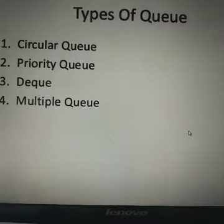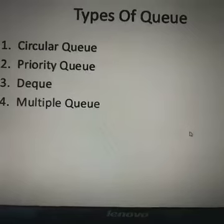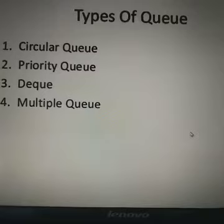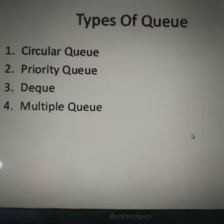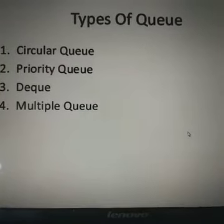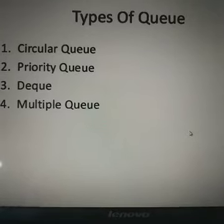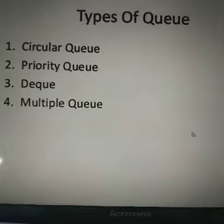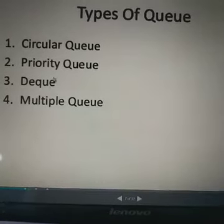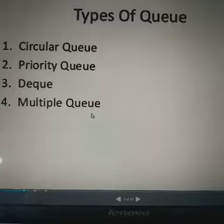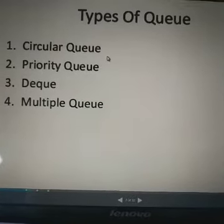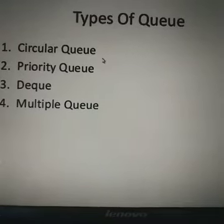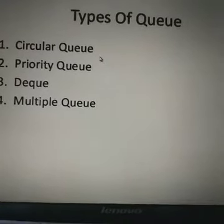In this lecture we discuss the types of queue. In the previous lecture we discussed what is the queue data structure, how we can represent the queue, and what are the operations to be performed on the queue — the enqueue and dequeue operations. Now we discuss the types of queue: circular queue, priority queue, deque, multiple queue, and the simplest form is the simple queue, which we already covered in the previous lecture.